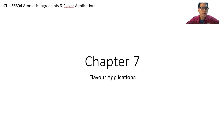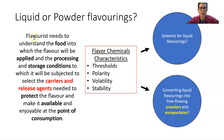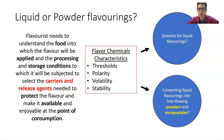For liquid or powder flavors, you need to understand the food into which the flavor will be applied, and the processing and storage conditions to which it will be subjected, in order to select the carrier or releasing agent needed to protect the flavor and make it available and enjoyable at the point of consumption. You first need to look at the properties of the flavor molecule — is it water-soluble or oil-soluble?